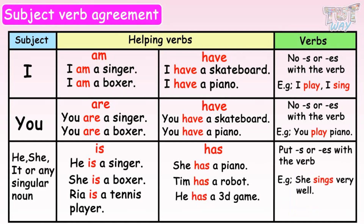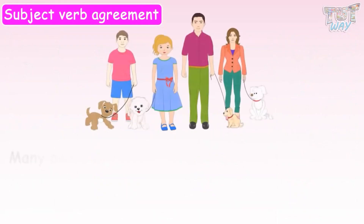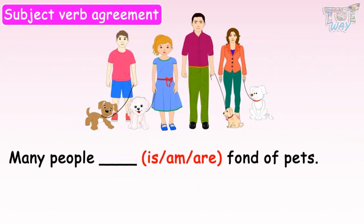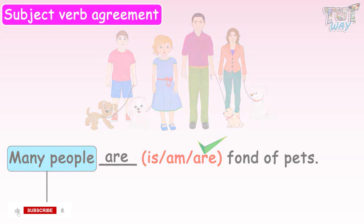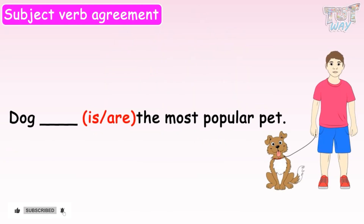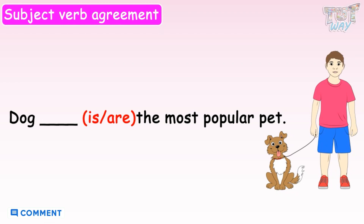Now let's fill in the blanks using these rules. Many people dash fond of pets. We are given three options: is, am, are. The subject is many people, which is plural, so we will use are. Many people are fond of pets. Next: Dog dash the most popular pet. The options are is and are. The subject is plural, so we will use are.